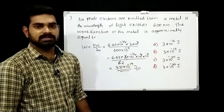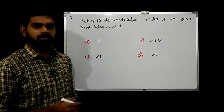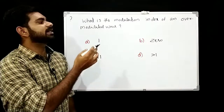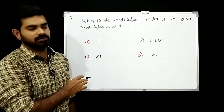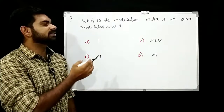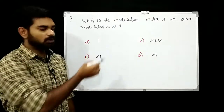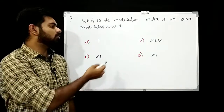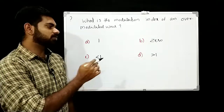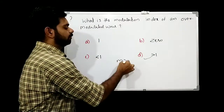What is the modulation index of an over-modulated wave? Option A: 1, option B: 0, option C: less than 1, option D: greater than 1. The answer is option D: greater than 1.